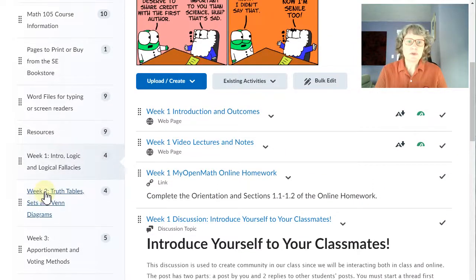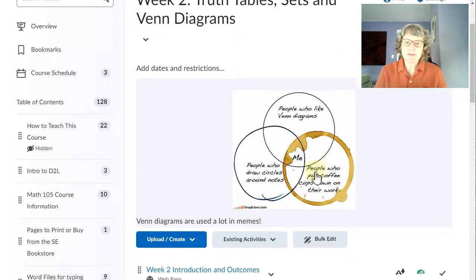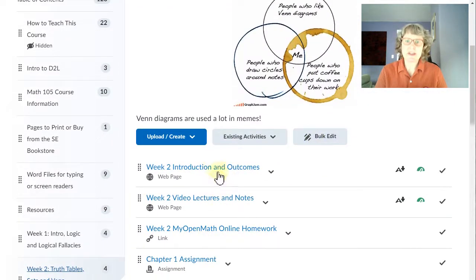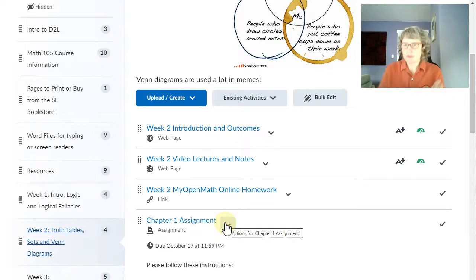And I want to show you week two also because it has a different type of assignment. So here's our image. The same first three things, introduction and outcomes, video lecture and notes. Then you do the online homework. And this one has a chapter assignment because we'll be finishing our chapter one in this week. So every time we finish a chapter, then there's a chapter assignment. So there are five of those throughout the term. It's roughly every other week, but not quite exactly.